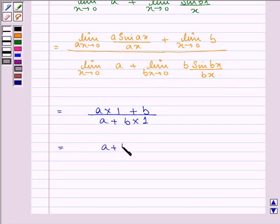So, we have a plus b upon a plus b, which on simplification can be written as equal to 1. So, 1 is the required answer to this question.